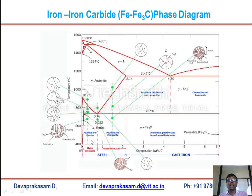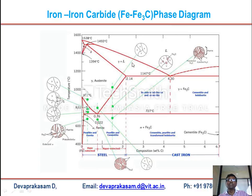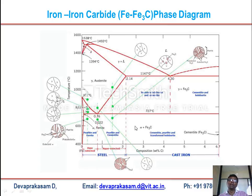You can see various phases: the ferrite phase (alpha ferrite) which is purely iron, the pearlite phase, and the austenite phase (gamma austenite). Above the delta ferrite region, the red lines indicate the liquid region. The region labeled gamma plus liquid transitions to gamma austenite solid, and then gamma cementite (Fe₃C).